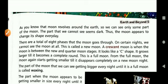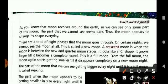As you know, the moon revolves around the earth so we can only see some part of the moon, and the part that we cannot see seems dark. Thus, the moon appears to change its shape every day.